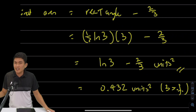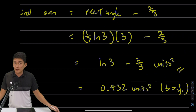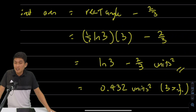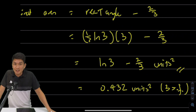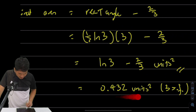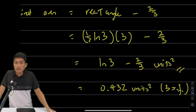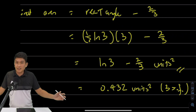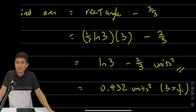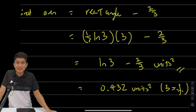This gives us the exact same answer as before — what you would have gotten if you had known how to integrate natural log of x, which, by the way, is what you're going to learn next year if you take JC H2 mathematics. The answer in 3 significant figures is 0.432. I hope you found this useful. If you have any questions, do drop a comment below, and I'll see you in the next video.